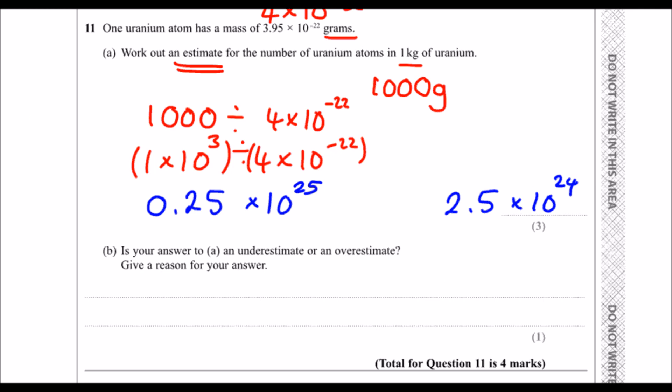Is our answer an underestimate or an overestimate? We rounded up, but then we divided by that. If you divide by a bigger number, you get a smaller answer. So we have rounded up, so we've actually underestimated because we rounded up. If you make the thing you divide by bigger, the answer you get is smaller.